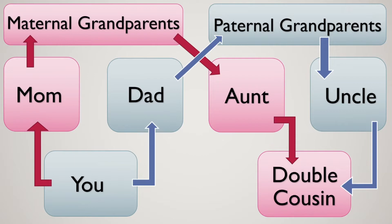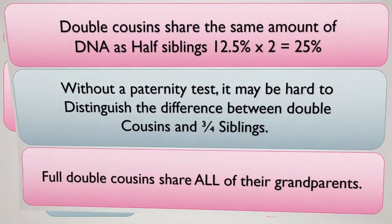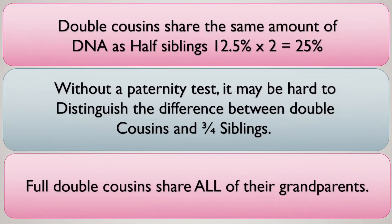Also remember that double cousins stretches down the generations. When your double cousin has a child and when you have a child, they're going to be double second cousins. I myself have double second cousins so I'm very familiar with this. Double cousins share the same amount of DNA as half siblings — 12.5% times 2 equals 25%. These numbers are on average, as DNA never splits evenly, but that's always something really cool to consider.